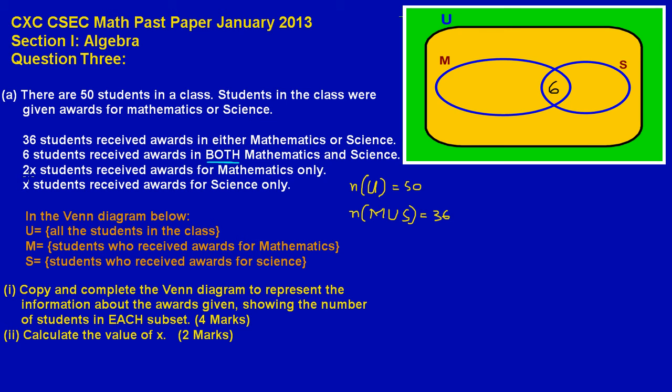And in this third line they're stating that 2x students receive awards for mathematics only. Now this 2x must go in math. And I will soon address the word only that they used. In the final sentence they said that x students receive awards for science only, so x students over here would receive awards for science.